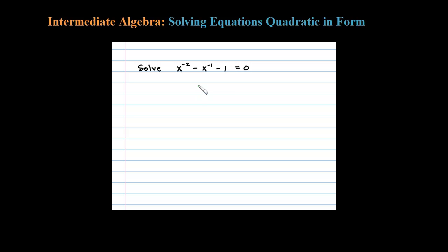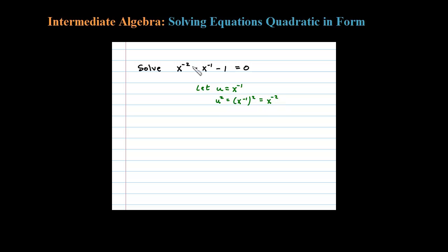To solve this equation I'm going to use substitution. The key to substitution is the middle term. I'm going to let u equal x to the negative 1 power, so u squared would be x to the negative 1 power squared. Power to power: multiply negative 1 times 2 equals negative 2, so x to the minus 2 is equal to u squared.